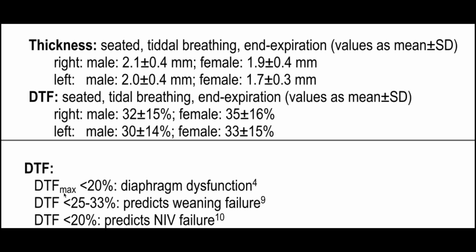A DTF max less than 20% indicates very little contraction and is consistent with diaphragmatic dysfunction. A DTF of 25 to 33% predicts weaning failure, and less than 20% predicts NIV failure. However, these values are not yet fully proven and should not be directly applied in clinical practice at this time — they remain on research lines.